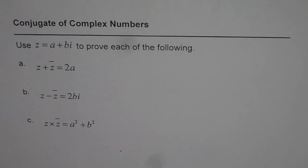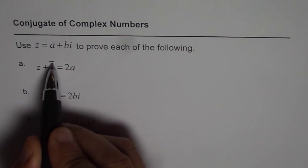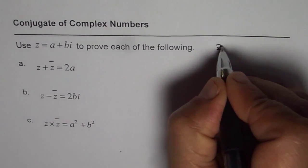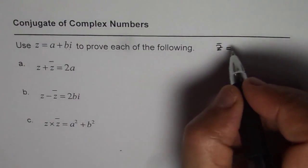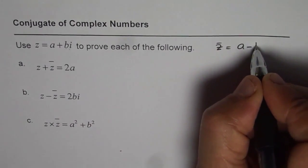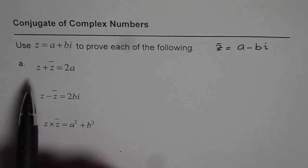Z represents a complex number and z bar is the conjugate. So for us, z bar will be equal to, since z is a plus bi, z bar will be a minus bi. Let's do these operations.